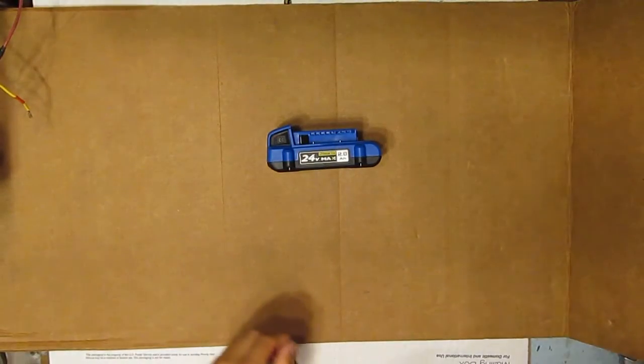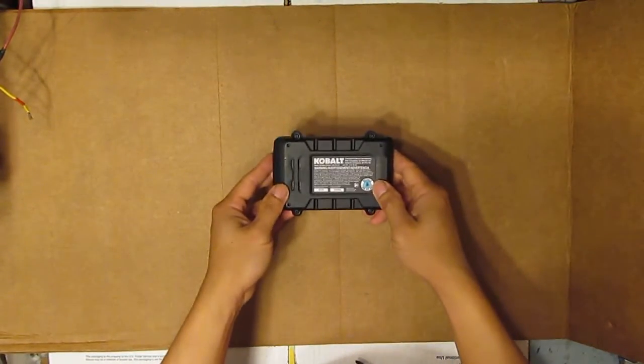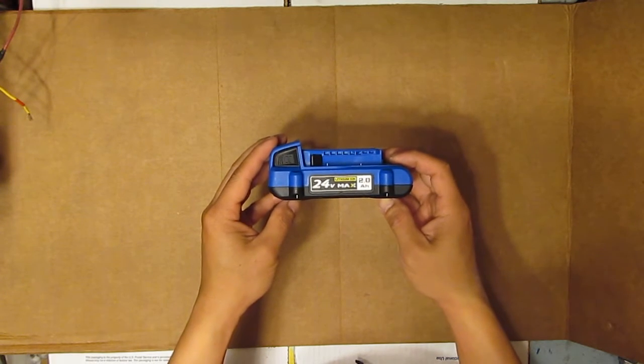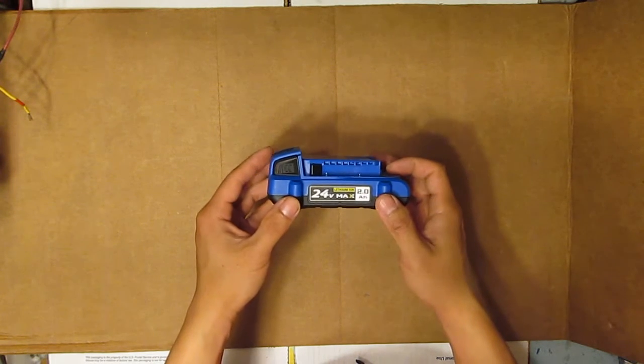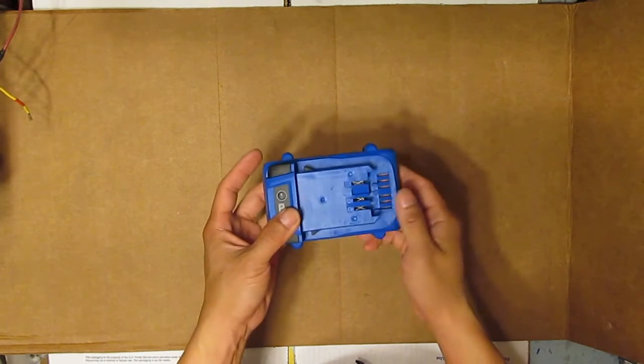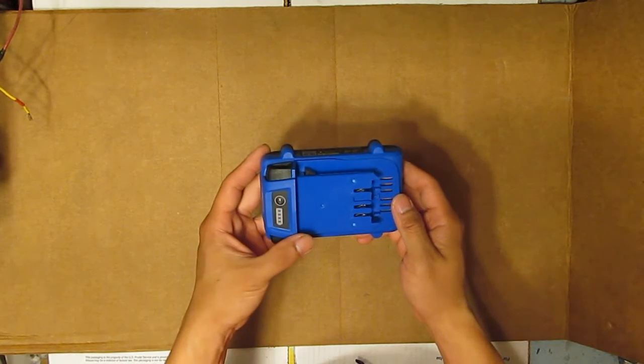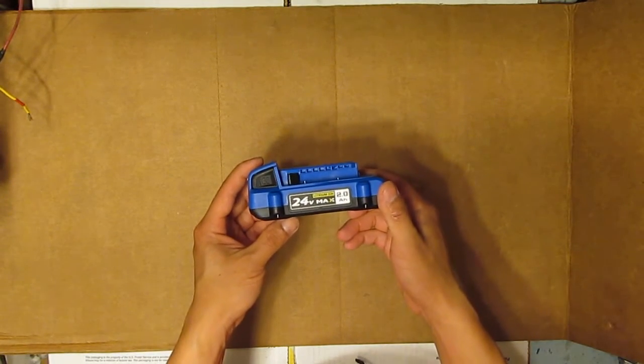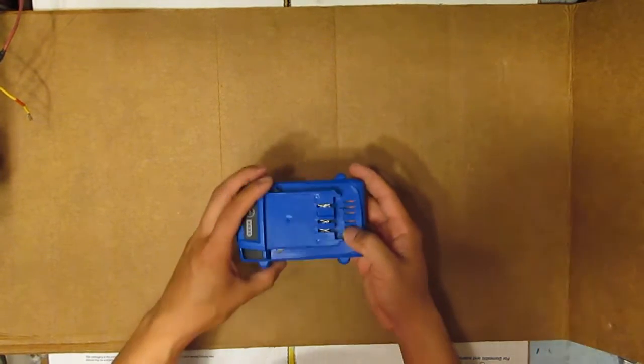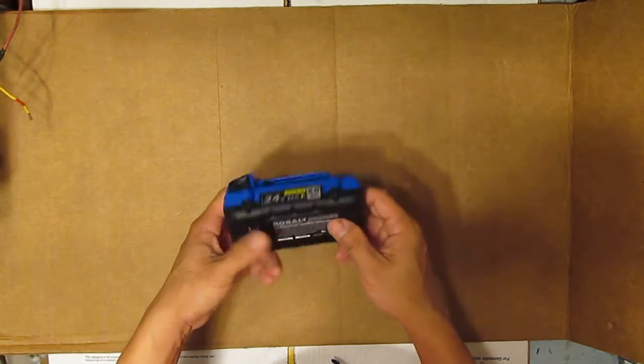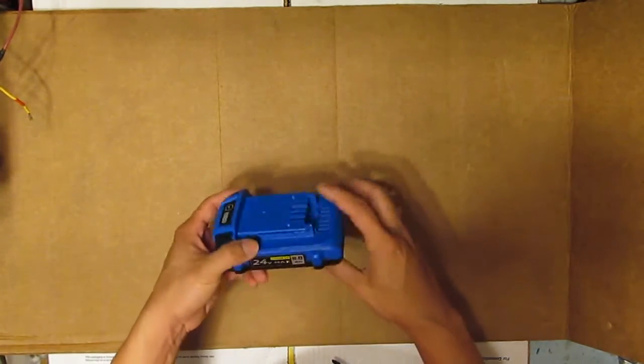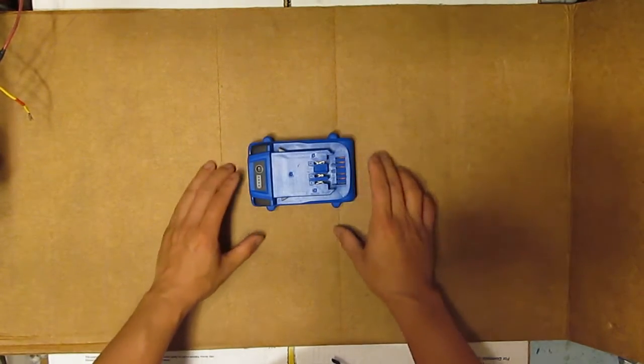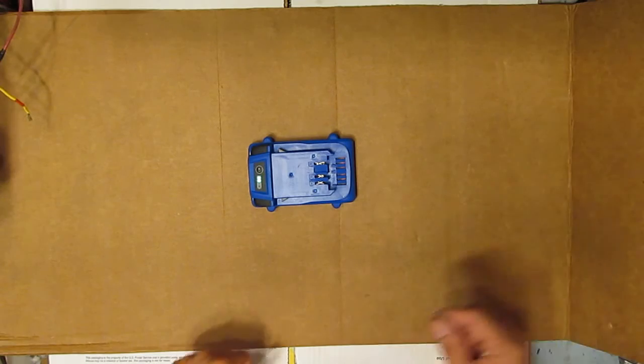Hi, today I have the Cobalt 24 volt 2Ah lithium ion battery. This is the latest and newest battery from Cobalt for the 24 volt cordless tool and I'm curious what's inside this battery, so today I'm going to disassemble this battery pack and show you what's inside.